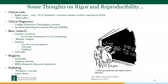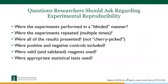There is also an initiative called Research Resource Identifiers (RRIDs). Begley's commentary laid out questions researchers should ask: Were experiments performed in a blinded manner? Were they repeated multiple times? Were all results presented, not just cherry-picked? Were positive and negative controls included? Were valid and validated reagents used? Were appropriate statistical tests used? We assume the answers are all yes, but when we look closely, that's often not the case.